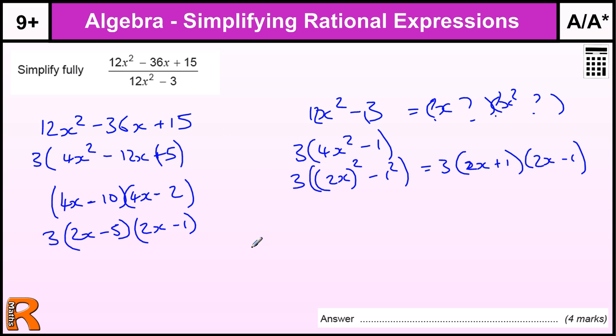But eventually, we get to the point where we've got 3 lots of 2x minus 5, over 2x minus 1, all over 3 lots of 2x plus 1, and 2x minus 1.